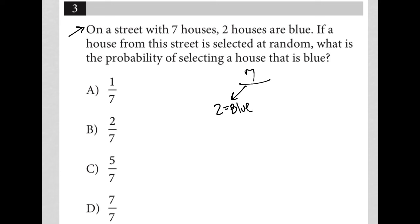If a house from this street is selected at random, what is the probability of selecting a house that is blue? So I'll just finish this out. That means five are not blue.